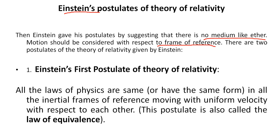The first postulate is known as Einstein's first postulate of theory of relativity. According to it, all the laws of physics are the same, or have the same form, in all inertial frames of reference moving with uniform velocity with respect to each other. This postulate is also known as the law of equivalence, meaning that all the laws of physics are equal. The concept of inertial frames of reference has been discussed in earlier video lectures.